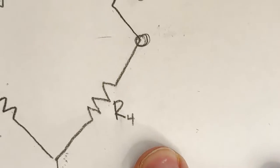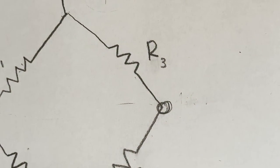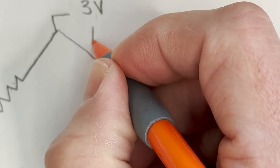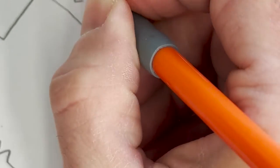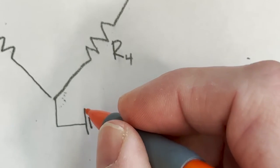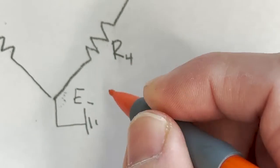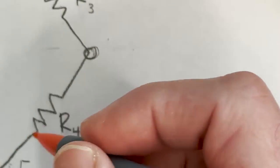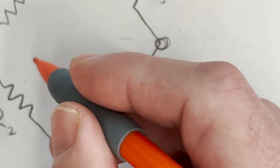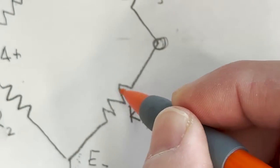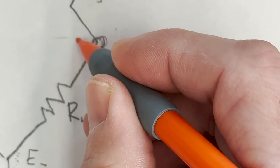If we want to go back to our strain gauge diagram here, E plus is our three volts, so this up here is our E plus. Our E minus is connected to the ground, so this is E minus.